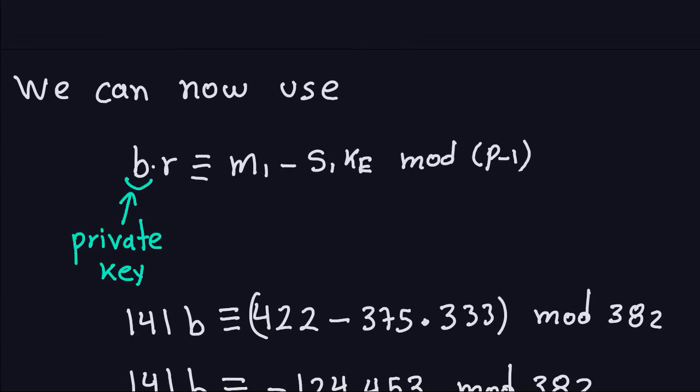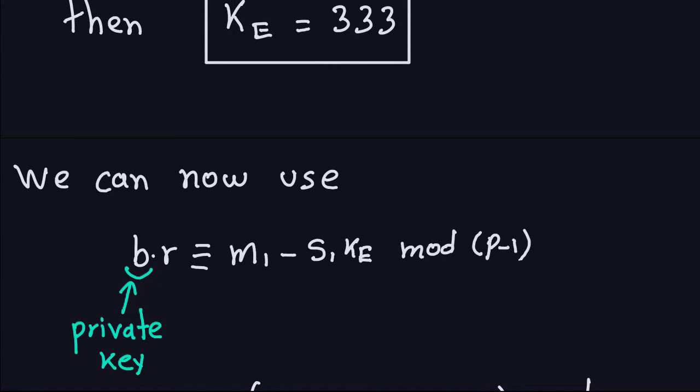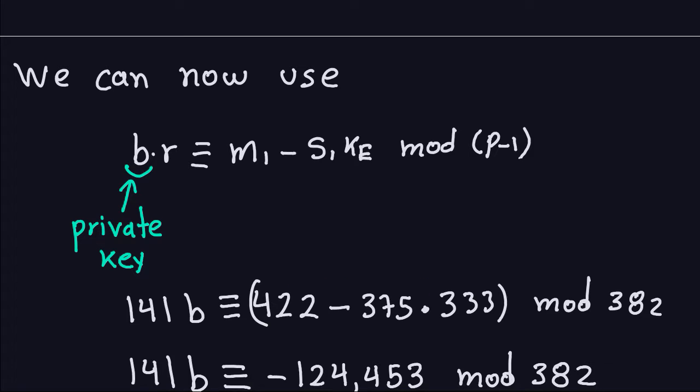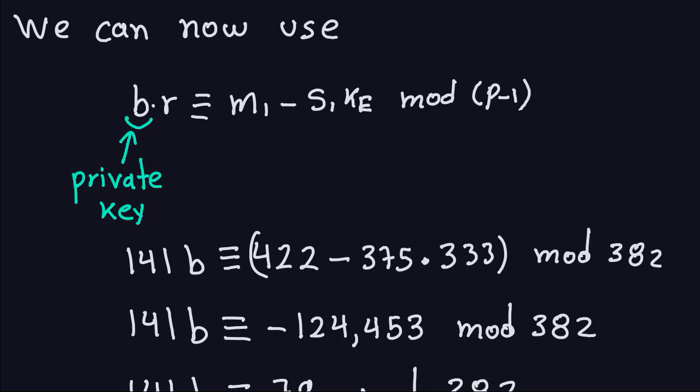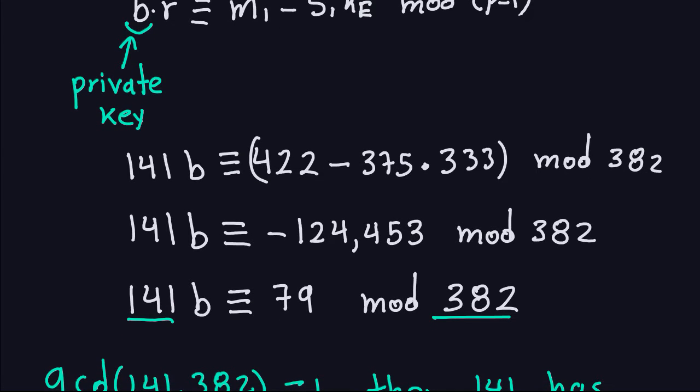I'm just going to go ahead and replace that. R is 141. The first message is 422. S1 is 375. And the ephemeral key is the one that we just computed, which is 333. I just do a normal multiplication subtraction. I get negative 124,453. That's going to be all modulo 382. I take this negative number, divide it by this, and get a positive remainder, which is 79 in this case. Everything can be done easily. It's not difficult, even if the numbers are large. And I get 141 here on this side.